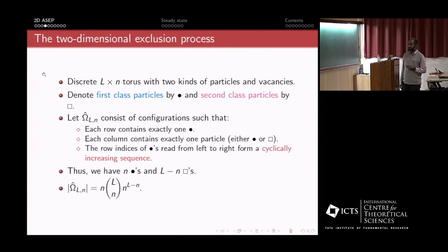This motivates the following process on two dimensions. You consider a torus, one side of which is length L, the other side has length n. We'll have two kinds of particles: first class particles denoted by filled circles and second class particles by empty squares. The space of configurations has the following restrictions: each row contains exactly one first class particle, each column contains exactly one particle either first or second class, and the row indices of the first class particles increase cyclically when you read them from left to right. We'll have n first class particles and L minus n second class particles.